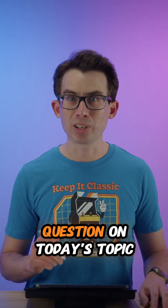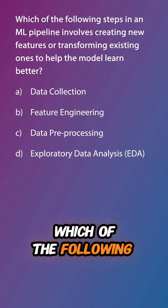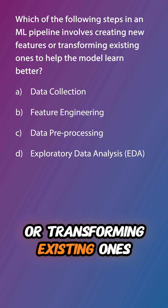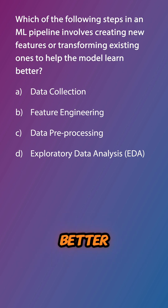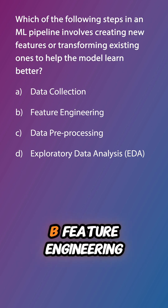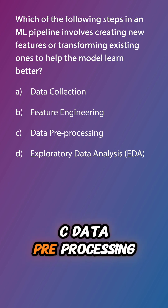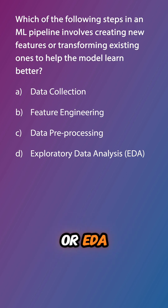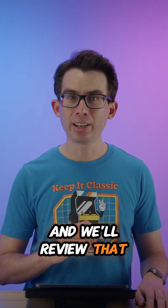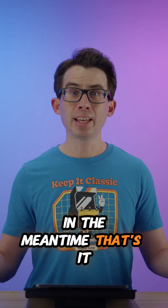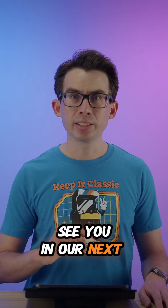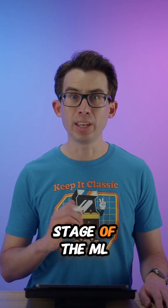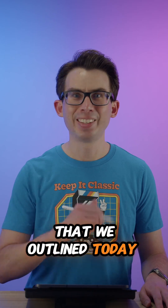Let's do a quick review question on today's topic. Which of the following steps in an ML pipeline involves creating new features or transforming existing ones to help the model learn better? Is it A, data collection; B, feature engineering; C, data pre-processing; or D, exploratory data analysis or EDA? Post your answer in the comments and we'll review that in our next episode. That's it for today — see you in our next episode where we'll be talking about AWS services and features which can support each stage of the ML pipeline that we outlined today.